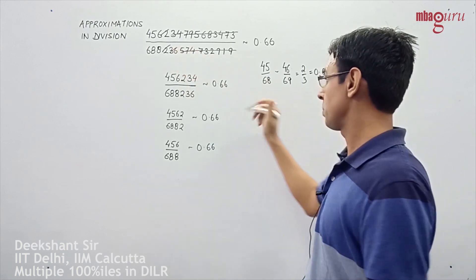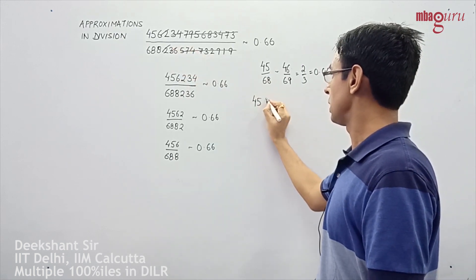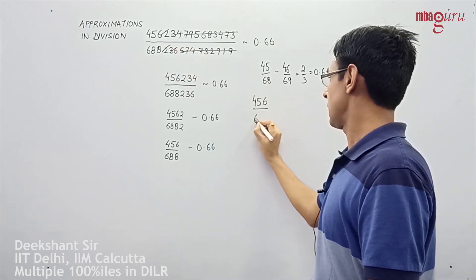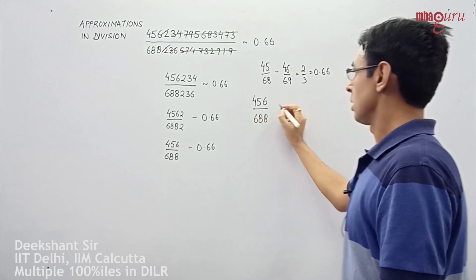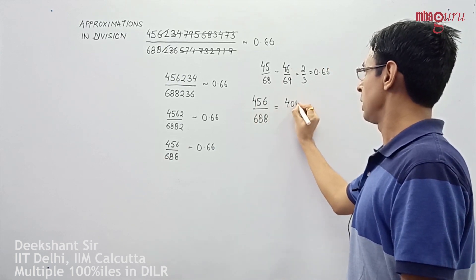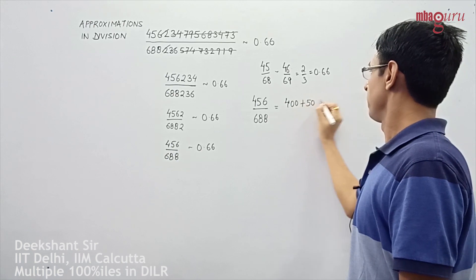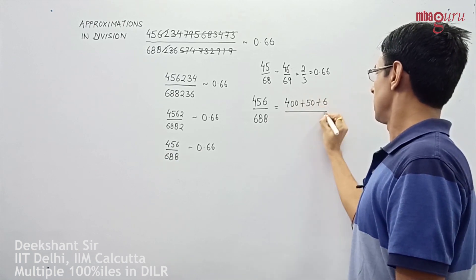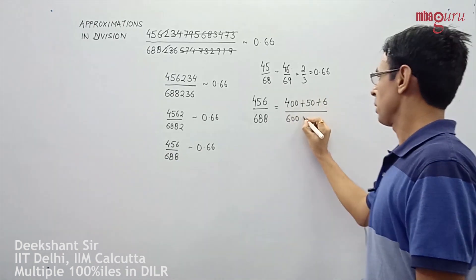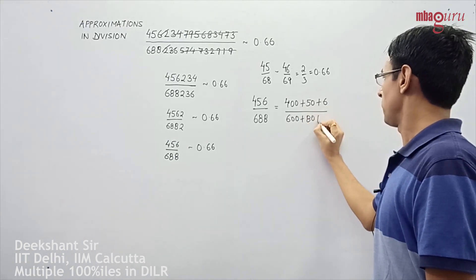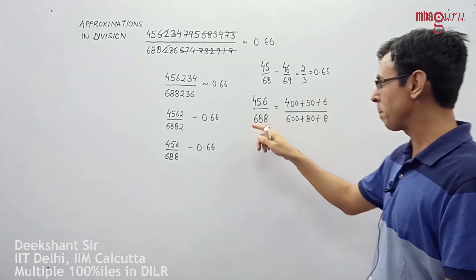When you look at an expression such as 456 upon 688, this is nothing but 400 plus 50 plus 6 divided by 600 plus 80 plus 8. And the impact of